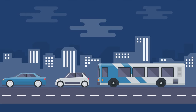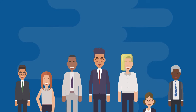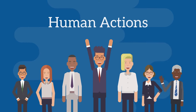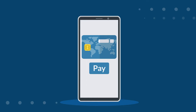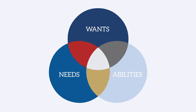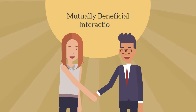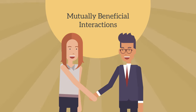Although these are aspects of an economy, economics at its core is about human actions. It's about the choices and actions we make as individuals. It's about our individual wants, needs, and abilities, and it's about how we interact with others to benefit each other and build the society around us.